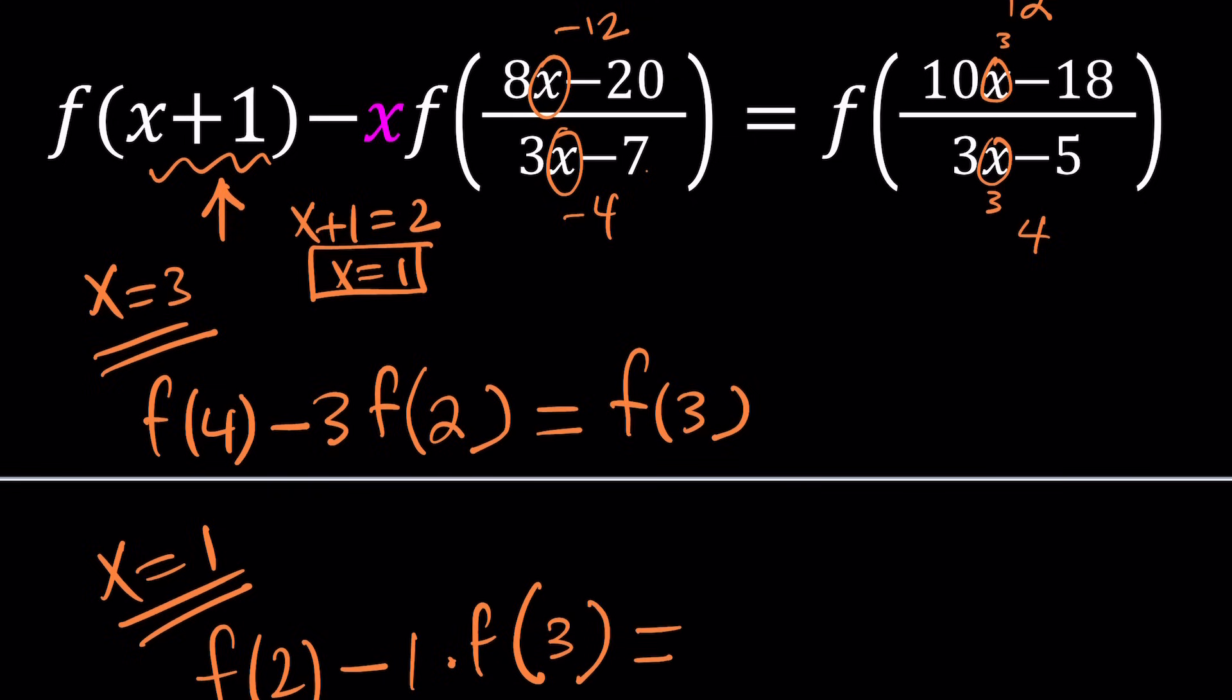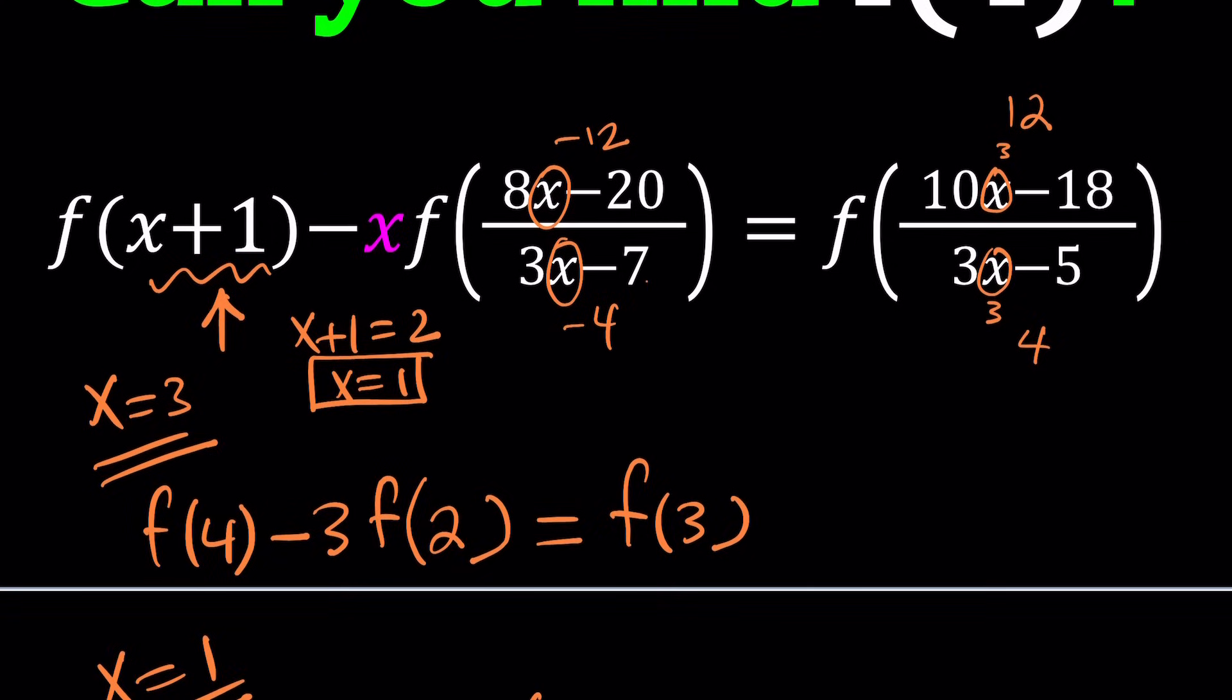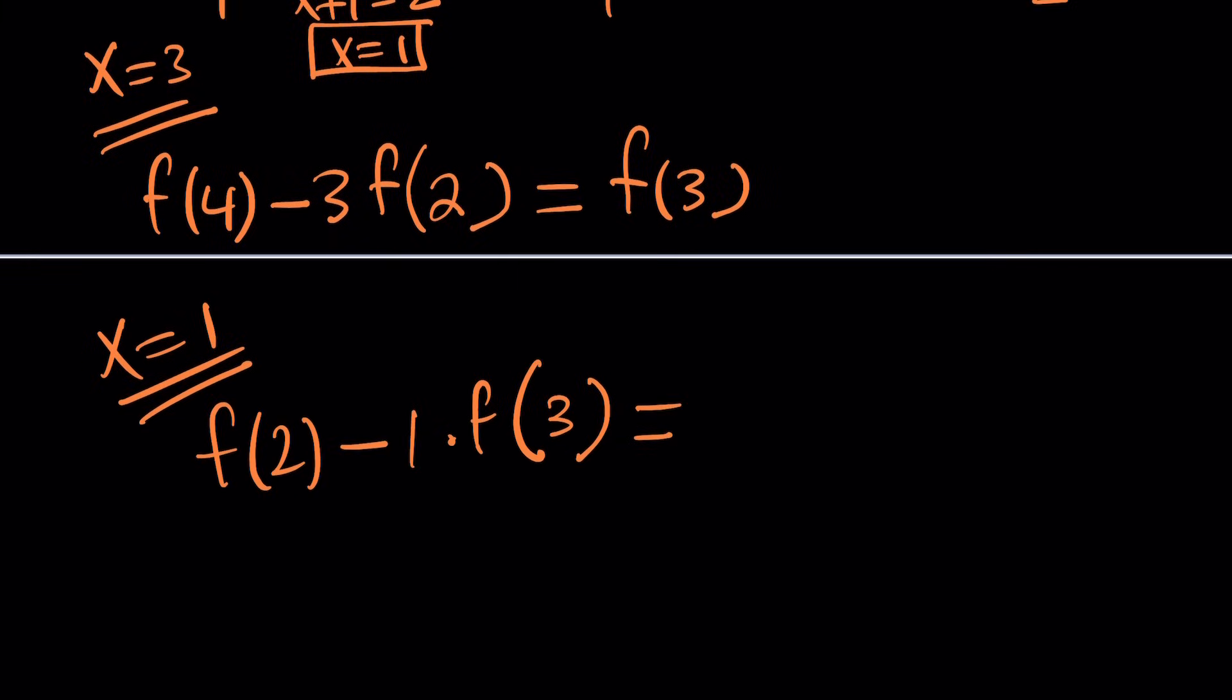And then some people are going to be like, oh, this problem was contrived. Of course, all competition problems are. Too bad if you don't like it. Now, replace x with 1 again. 10 minus 18 is negative 8. 3 minus 5 is negative 2. Negative 8 divided by negative 2 is 4. So this gives us f(4). How convenient, right?